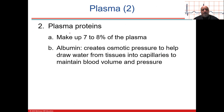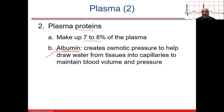Plasma proteins are really important for maintaining osmotic balance and keeping water going into the vessel. Albumin is the most abundant plasma protein, making up 7–8% of the plasma. These proteins never leave the blood, because if they get into the extracellular fluid, you'll have problems maintaining fluid balance between your blood vessels, tissue, and ECF.